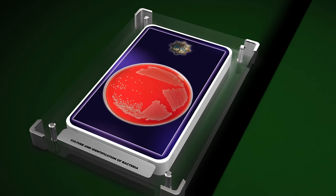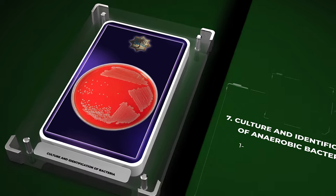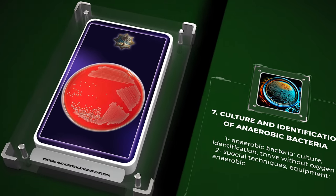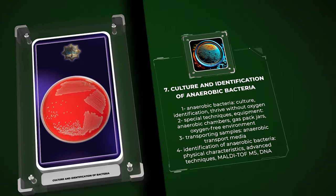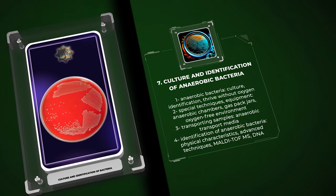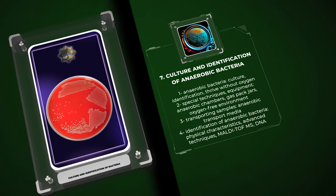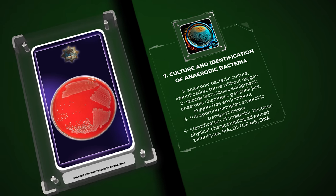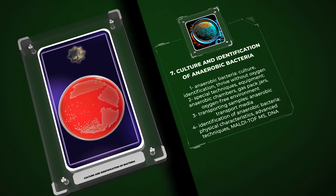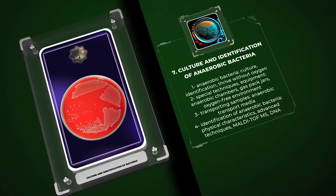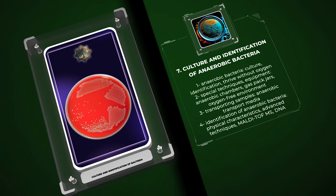In this section, we will discuss the culture and identification of anaerobic bacteria, which are bacteria that thrive without oxygen. Special techniques and equipment, such as anaerobic chambers and gas-packed jars, are used to create an oxygen-free environment for their cultivation. When transporting samples, anaerobic transport media are used. Identification involves observing physical characteristics and using advanced techniques such as MALDI-TOF-MS or DNA sequencing.